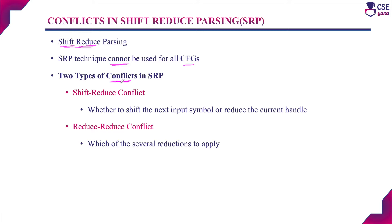Shift-reduce parsing cannot be implemented for all context-free grammars because of two types of conflicts: one is shift-reduce conflict, and the other is reduce-reduce conflict.